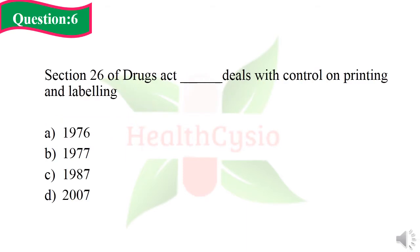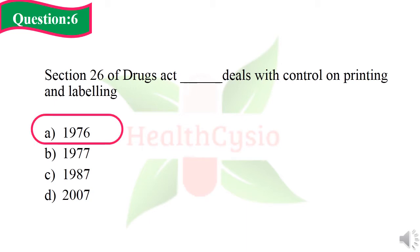Question 6: Section 26 of Drug Act dash deals with control on printing and labeling. Option A: 1976. Option B: 1977. Option C: 1987. Option D: 2007. The right answer is Option A, 1976.